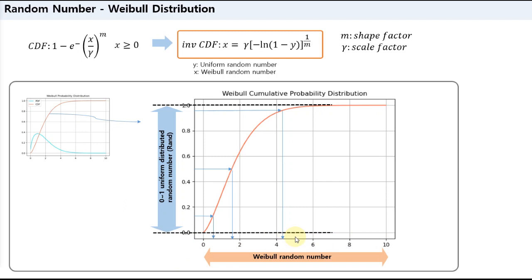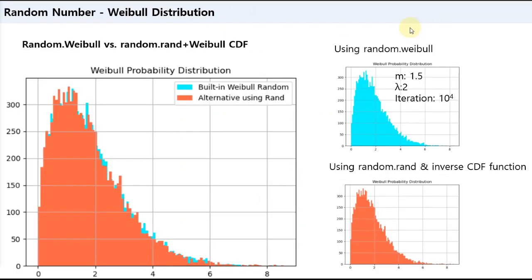Well, let's check if this actually works as we expect. First, we created 10 thousand Weibull random numbers with 1.5 shape factor and 2.0 scale factor. Second, as explained in the previous part using uniform random numbers from 0 to 1, with the random.rand command and inverse CDF function, I create the Weibull random numbers. If we look at the graph, they are perfectly matched. Of course, they are not exactly identical because of randomness.